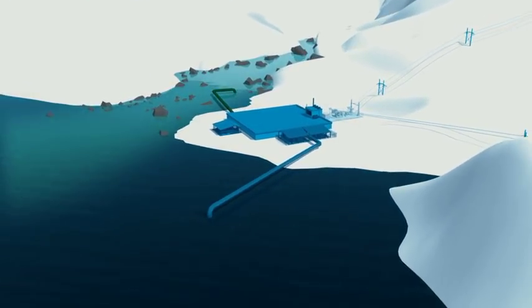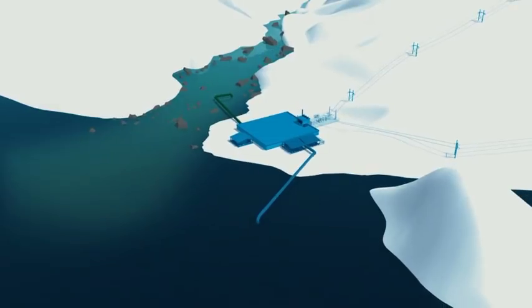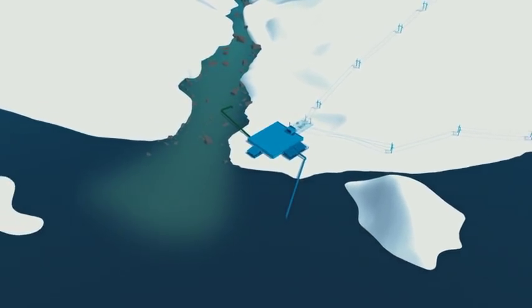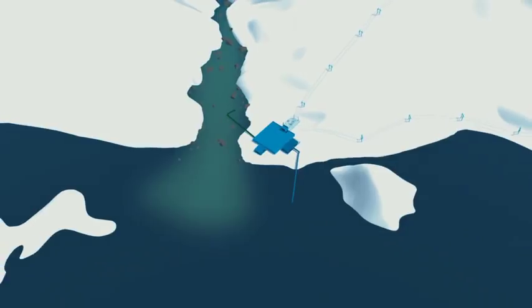Statkraft opened the world's first prototype osmotic power plant in Norway in 2009 and aims for commercial production in 2015.